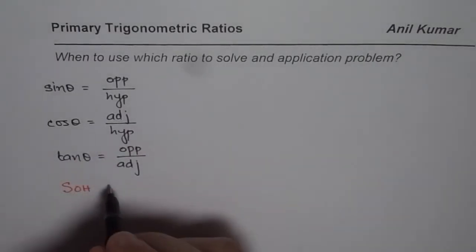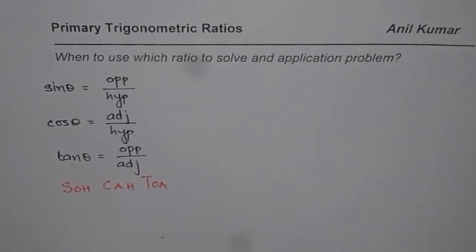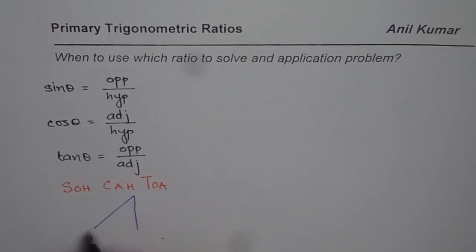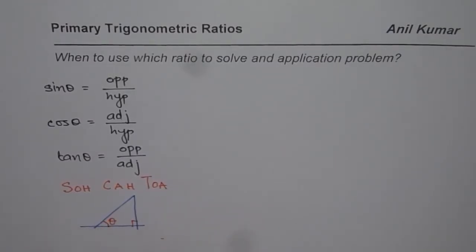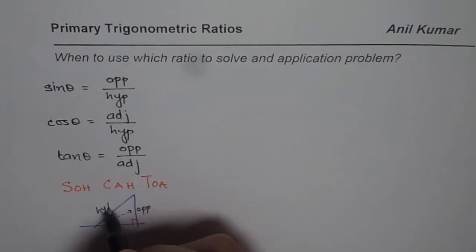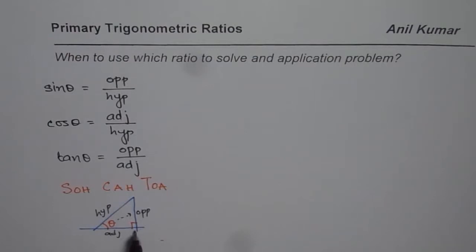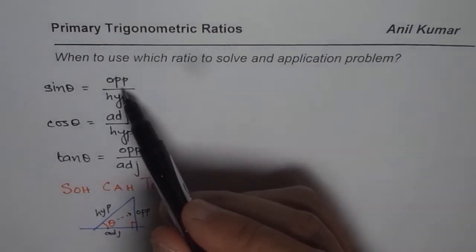Cosine as adjacent over hypotenuse and tan as opposite over adjacent side. Given a right triangle where one angle is 90 degrees and another is theta, the opposite side is the side across from theta, the hypotenuse is the longest side, and the adjacent side is the side between the given angle and the 90-degree angle. The side opposite to the angle with the hypotenuse gives sine theta.